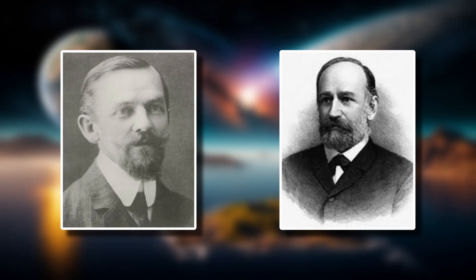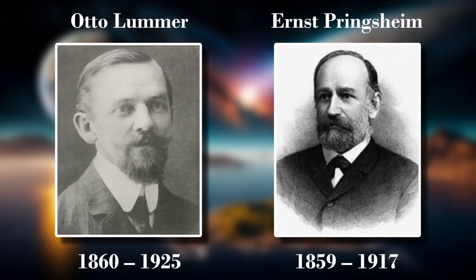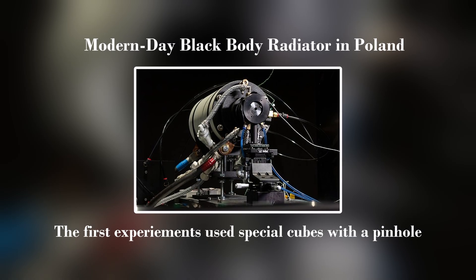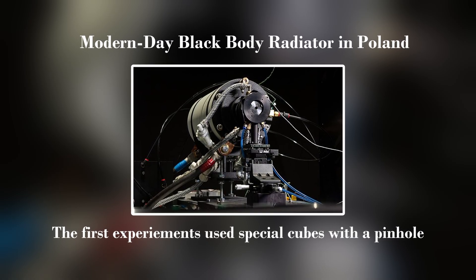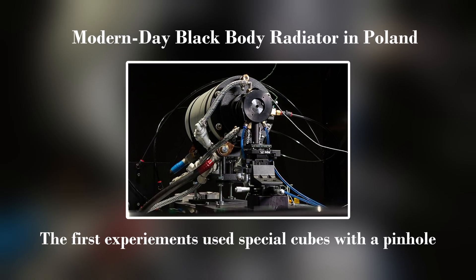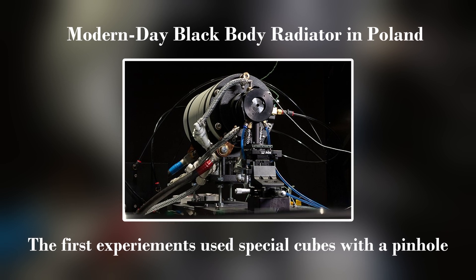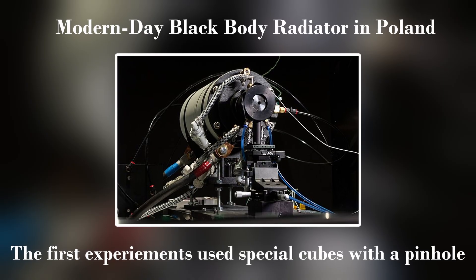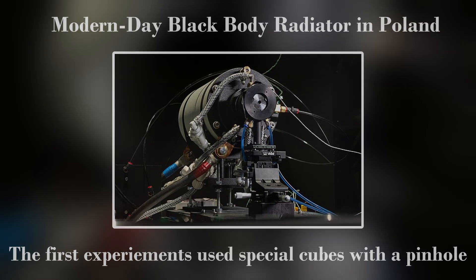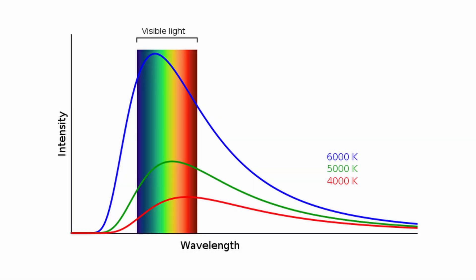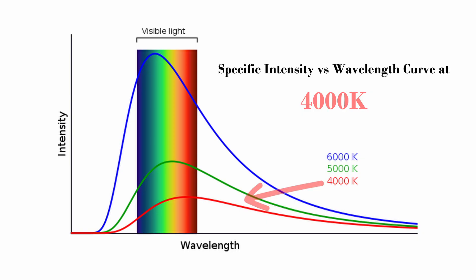Let's start from the beginning, with two scientists by the name of Otto Lummer and Ernst Pringsheim. During the 19th century, they set up man-made black bodies and collected data to model the relationship between the wavelength of light emitted and the specific intensity or energy density of that light. They repeated this data collection at many different temperatures for the black bodies. After the experiment was complete, the data was organized into a graph that looked something similar to this. Each curve on this graph represents a relationship between the wavelength of emitted light and the specific intensity of the emitted light at a certain temperature.